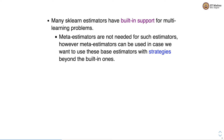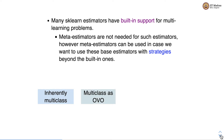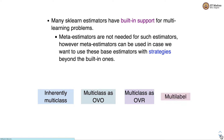Many sklearn estimators have built-in support for multi-learning problems, so meta estimators are not needed for such estimators. However, meta estimators can still be used when we want to use these estimators with strategies beyond the ones that are already built-in. Some sklearn estimators are inherently multi-class, others implement one versus one or one versus rest strategies, and there are also multi-label sklearn estimators.